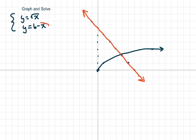I went ahead and took the liberty of graphing these. This is your linear, and the black is your y equals square root of x.